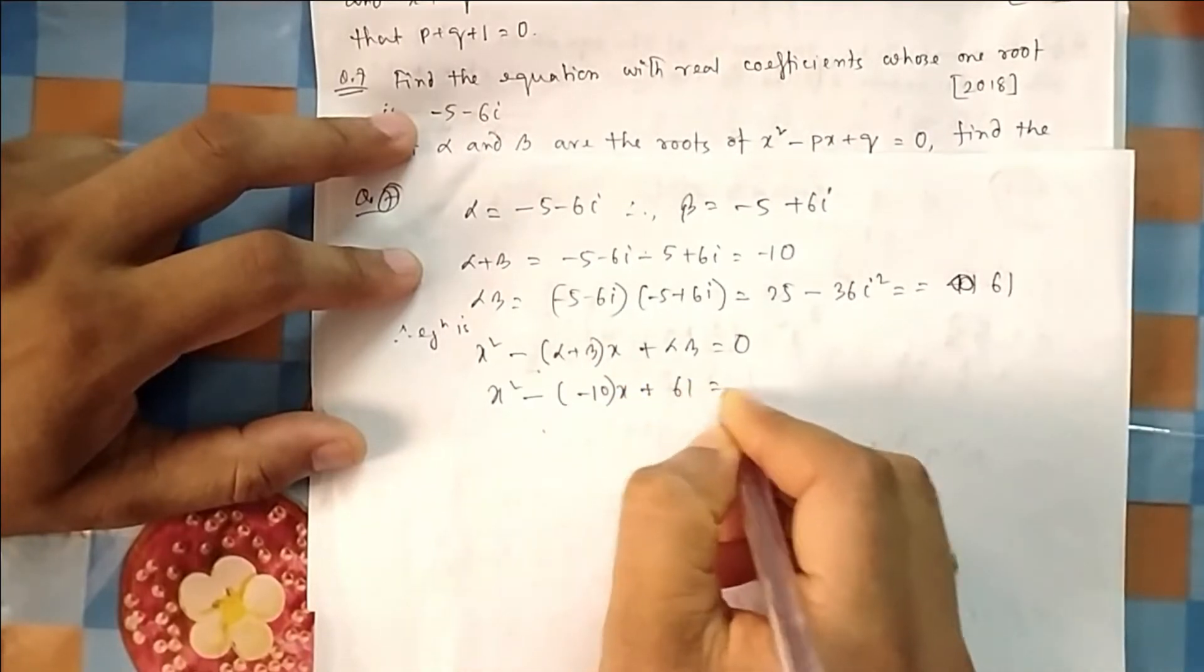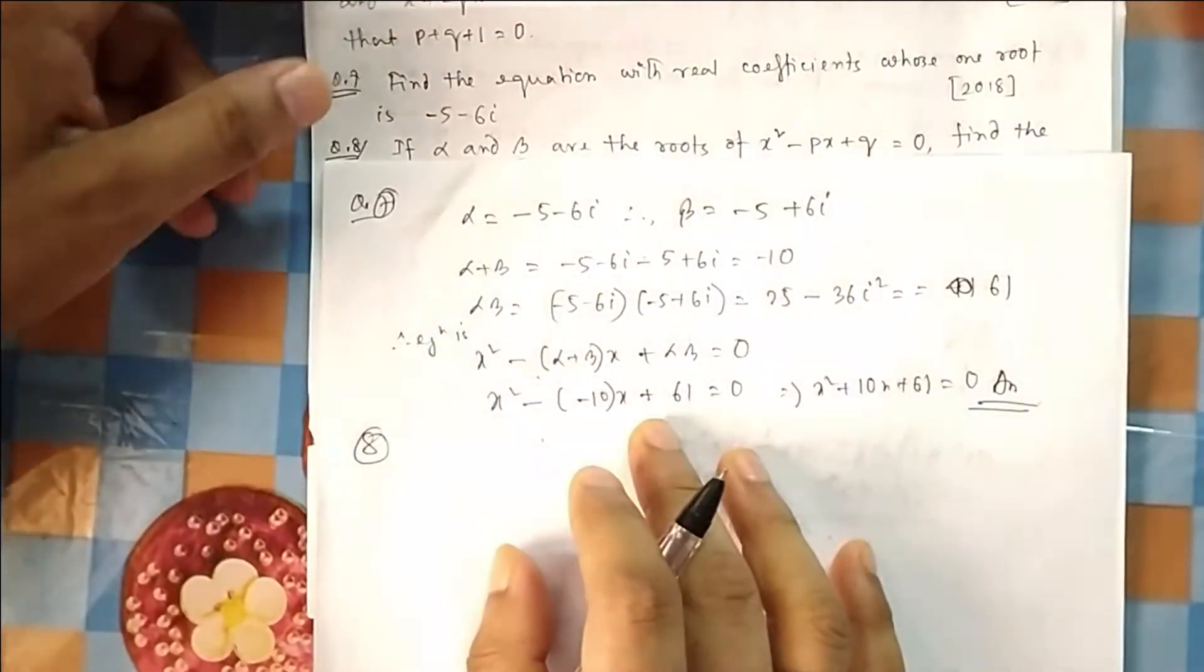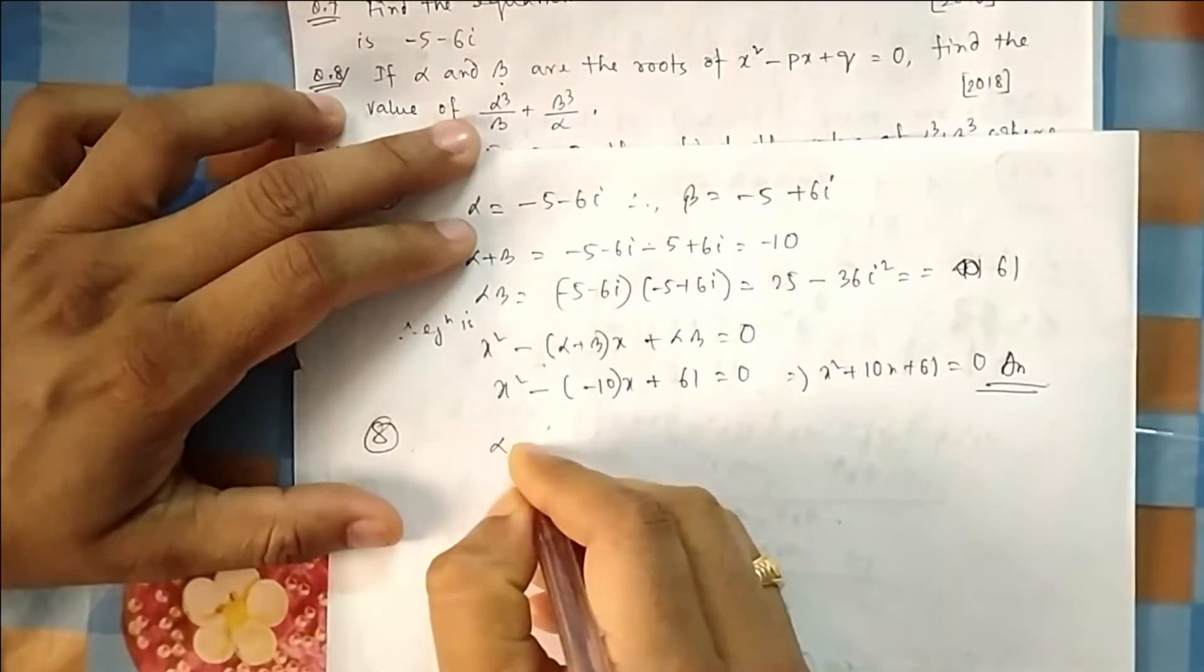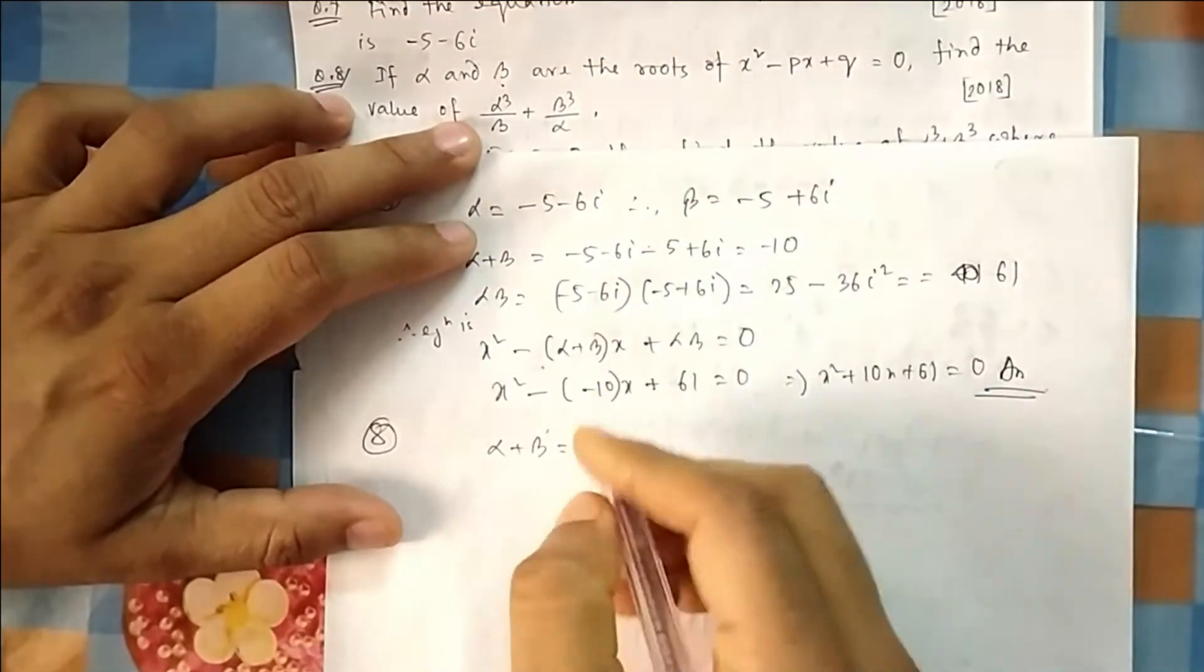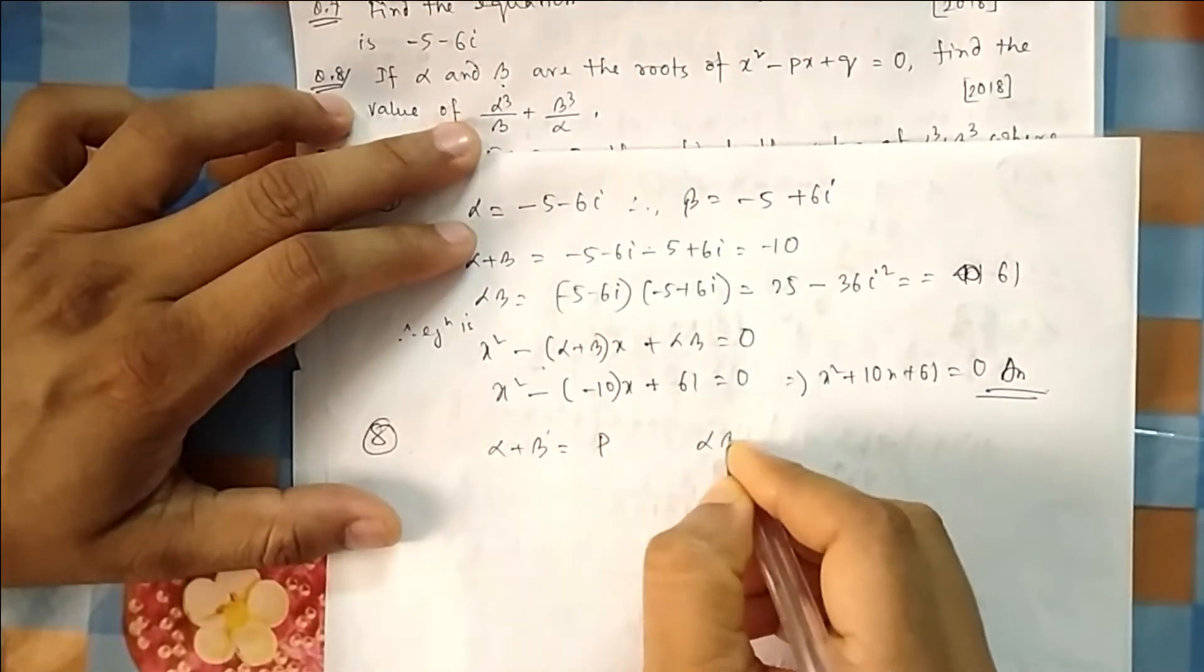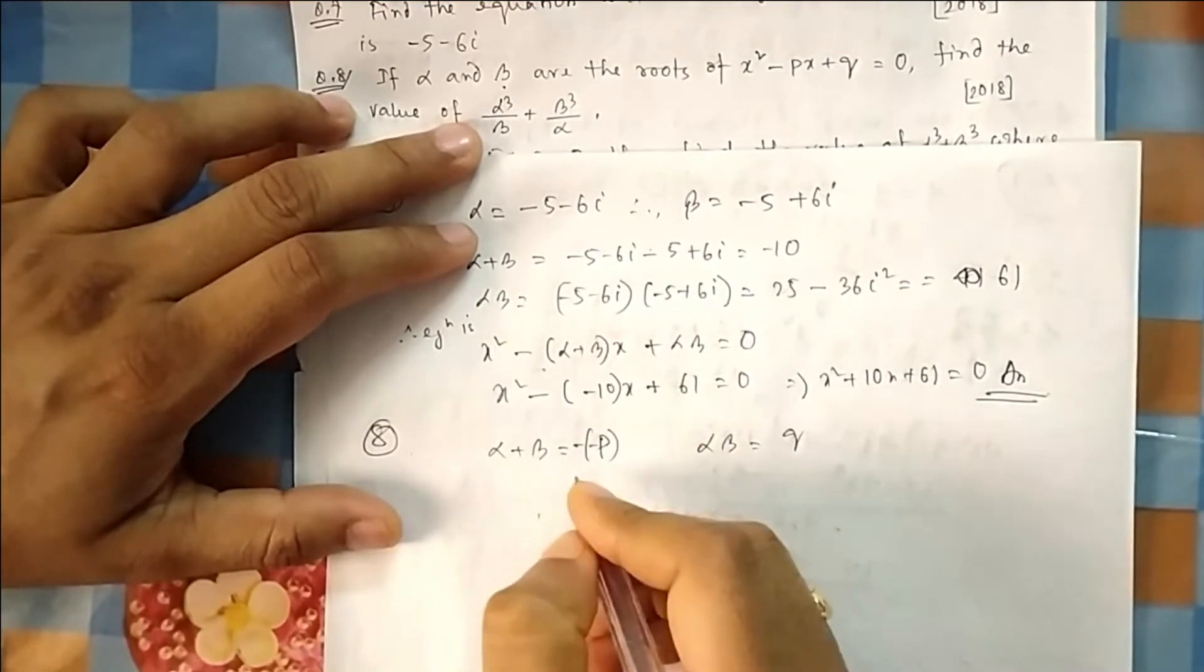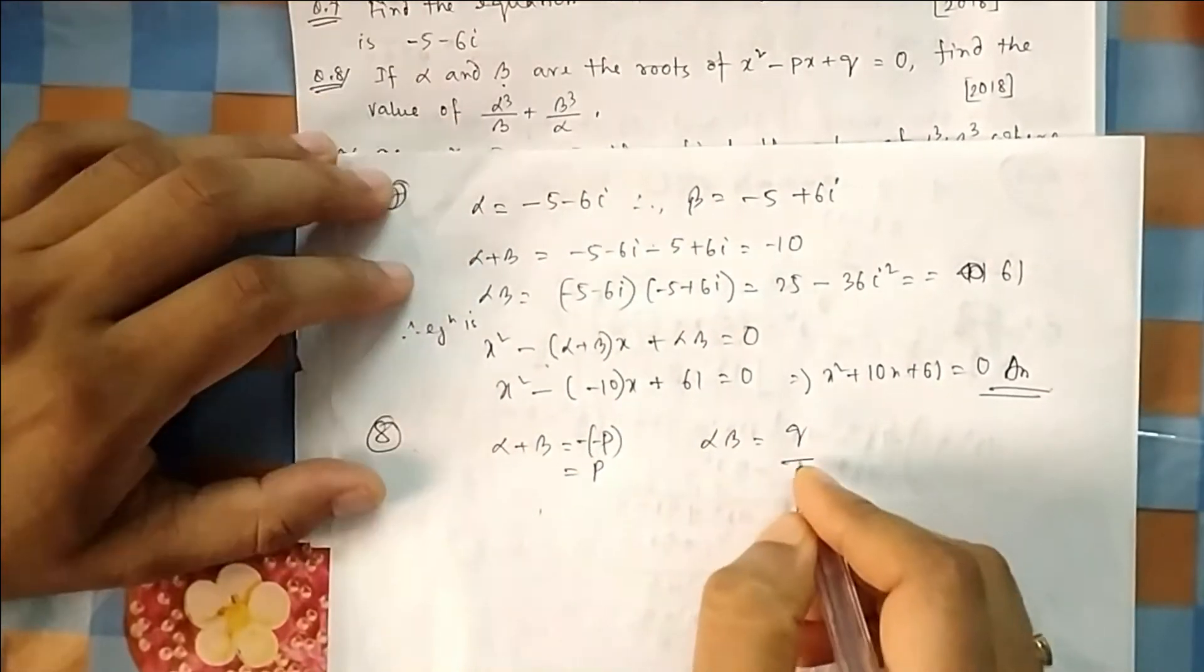So in question number 8, if α and β are the roots of this one, you see, α, find the value of this one. So α, β are the roots, that means α+β equal to -b/a that is p, and αβ is equal to, minus minus p, so it is... q. That's why, and this is also q.